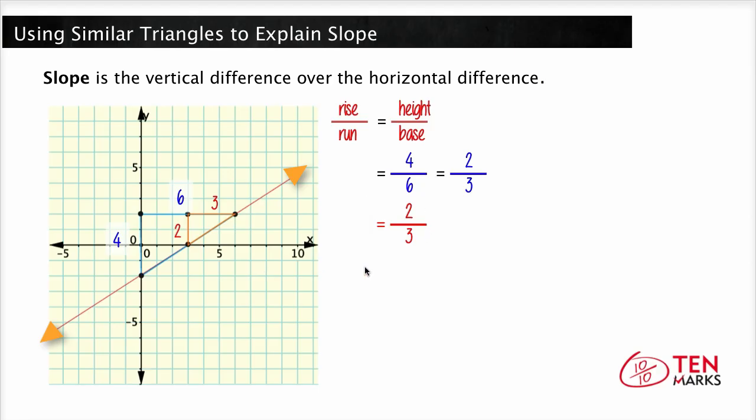Now no matter what right triangle you draw on the line, the ratio between the sides will always be 2 to 3, giving you 2 thirds for a slope. See over here, we've added a new triangle with a height of 6 and a base of 9, and that will again reduce to 2 thirds.